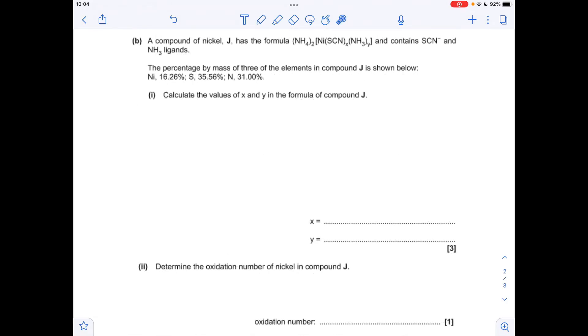Moving on to part B, the first thing we're going to do is work out the ratio of nickel to sulfur to nitrogen—it's like an empirical formula type calculation. That gives us a nickel to sulfur to nitrogen ratio of 1 to 4 to 8. If we go up to the formula they've given us, you can see there's nickel to sulfur there, so that means X must be 4.